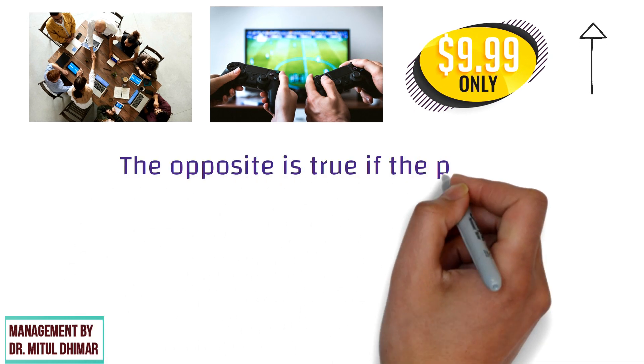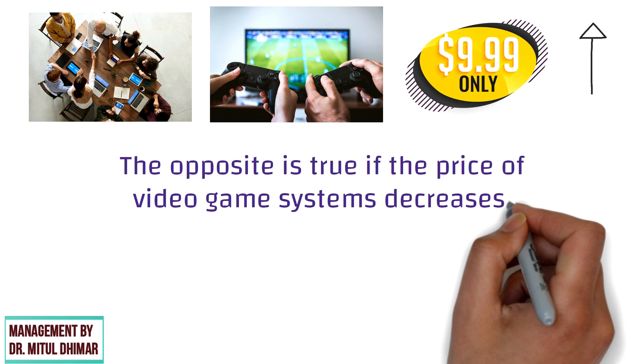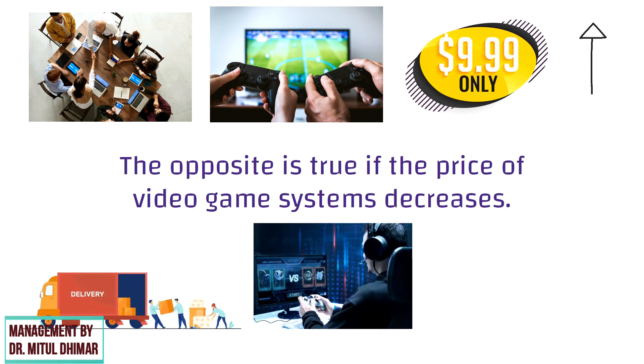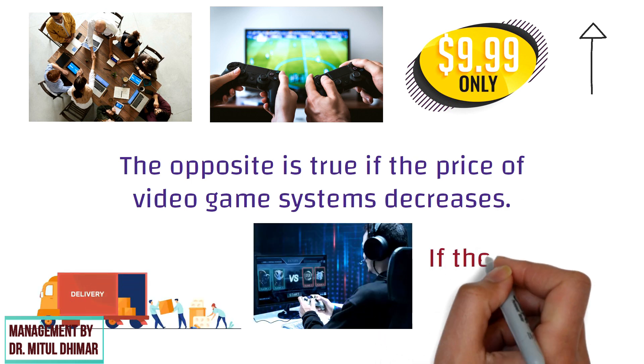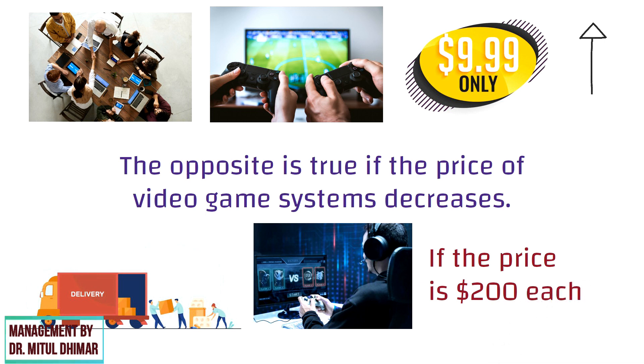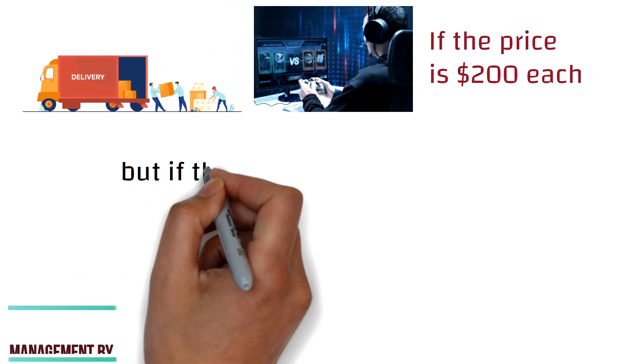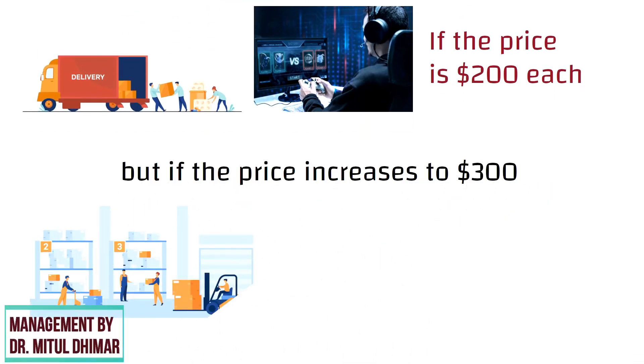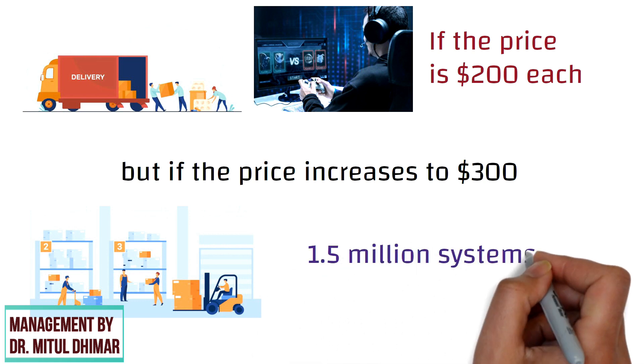For example, a business will make more video game systems if the price of those systems increases. The opposite is true if the price of video game systems decreases. The company might supply 1 million systems if the price is $200 each, but if the price increases to $300, they might supply 1.5 million systems.